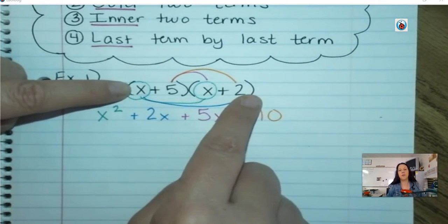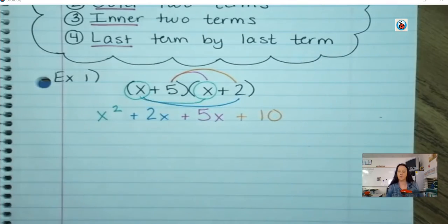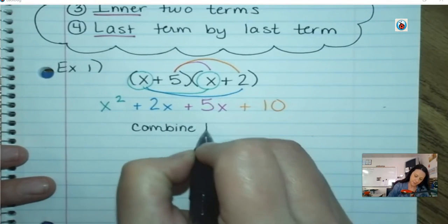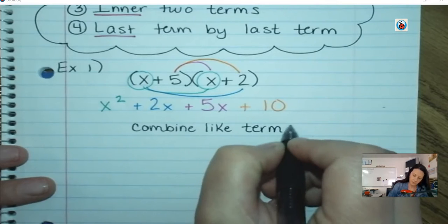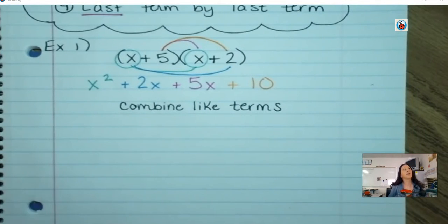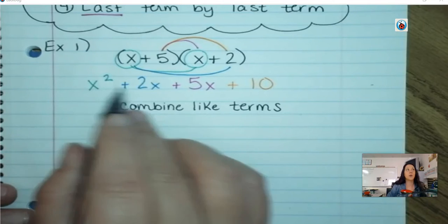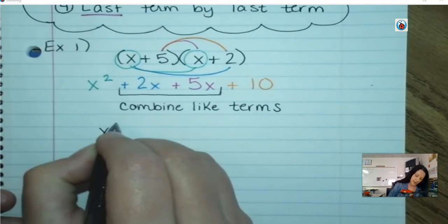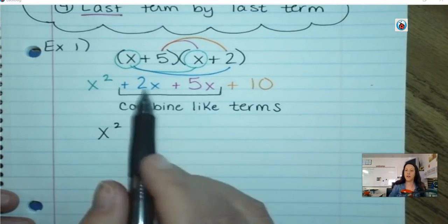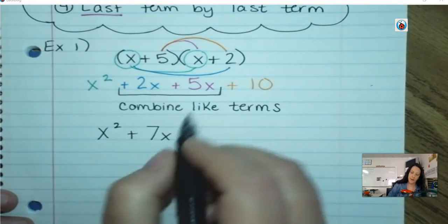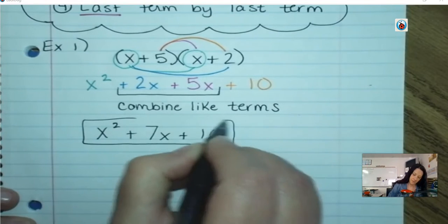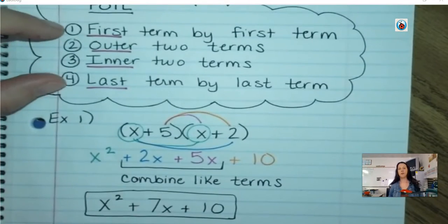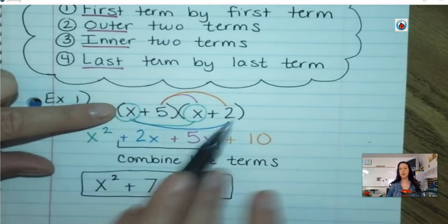So: first term by first term, outer terms, inner terms, and last term by last term. The last step you need to do is see if you can combine like terms. x squared — there's no other x squared. There's an x and an x, so those can be combined. I have x squared; I have a 2x and a 5x — 2x plus 5x is 7x. And then I have a plus 10. That's your final answer. FOIL is just used to help you remember to multiply each term by each term.